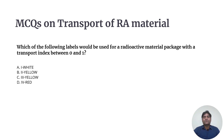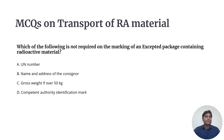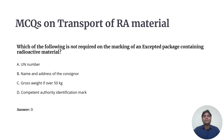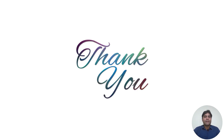Question 8: Which label would be used for a radioactive material package with a transport index between 0 and 1? It would be Yellow-II category, because it is between 0 and 1. If the transport index is less than 0.05, it goes into Category I White. Question 9: Which of the following is NOT required on the marking of an excepted package containing radioactive material? Option D — the competent authority identification marks — would not be there. Otherwise all other markings would be present on the package.